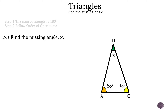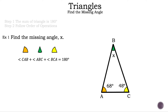Now let's read the question: find the missing angle X. Let's take a look at the triangle that they gave us. They gave us two measurements: 68 degrees and 48 degrees. We know that the sum of a triangle is 180 degrees, so we can say the orange angle, or angle CAB, plus the green angle, or angle ABC, plus the yellow angle, or angle BCA, is equal to 180 degrees.